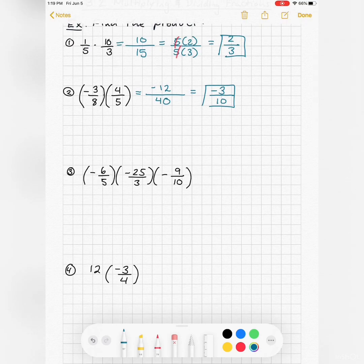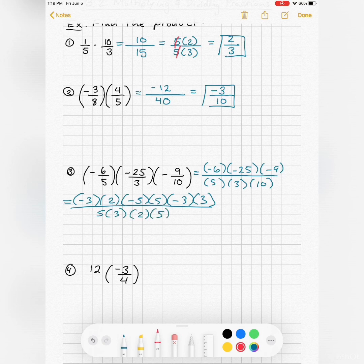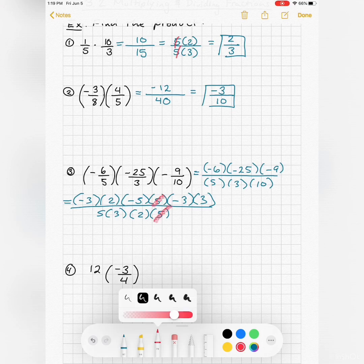If I have three factors, I still just multiply all the way across the numerator and denominator. Let me see: negative six, negative 25, negative nine. The bottom is five times three times two times five. Then I start canceling common factors.